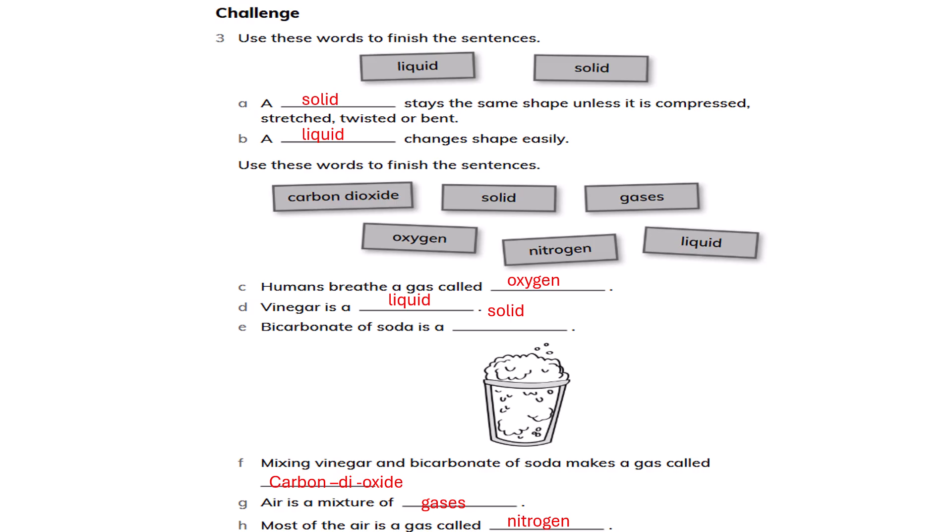Use these words to finish the sentences: carbon dioxide, solid, gases, oxygen, nitrogen, and liquid. Humans breathe a gas called oxygen. Vinegar is a liquid. Bicarbonate of soda is a solid. Mixing vinegar and bicarbonate of soda makes a gas called carbon dioxide. Air is a mixture of gases, and most of the air is a gas called nitrogen.